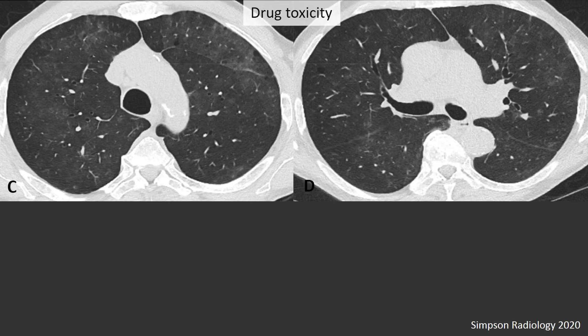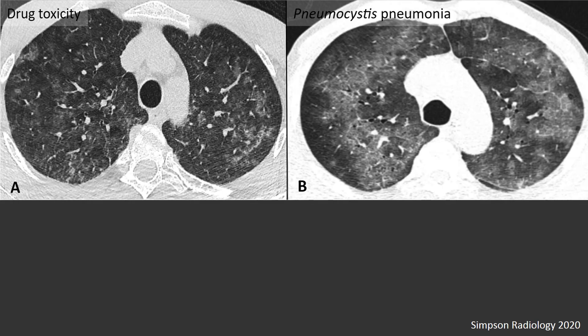These features are very non-specific and can be seen in a wide variety of diseases. Examples include drug toxicity demonstrating widespread patchy ground glass opacities without a clear distribution, as well as pneumocystis pneumonia showing patchy and diffuse ground glass opacities. These are indeterminate features for COVID-19 pneumonia and can be seen in many different diseases.